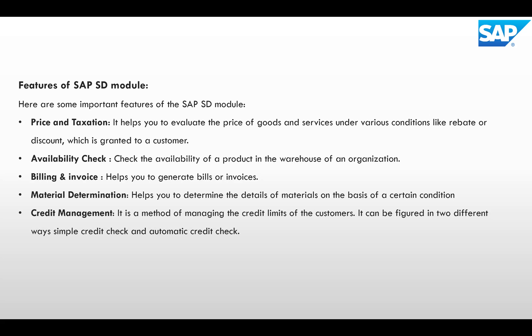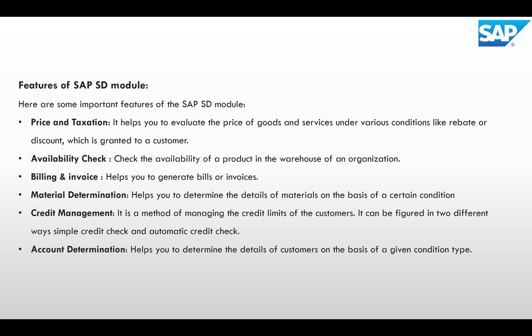Credit Management is one of the major features in SAP SD module where we handle the credit limits of the customer. It can be configured in two different ways: simple credit check and automatic credit check. Before or while creating a sales order, it checks the credit terms. Account Determination is also an important feature of the SD module — it helps to determine the details of customers based on given condition types. All these things we will see practically in SAP S/4HANA server.